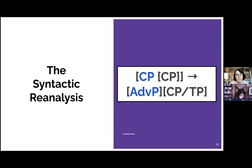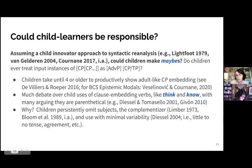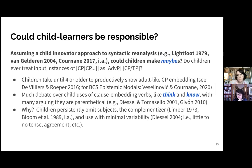This syntactic reanalysis — from a biclausal construction to an adverb phrase adjunct on a monoclausal construction — raises the question of where it comes from, and more specifically, could child learners be responsible for this? Adopting a child innovator approach to syntactic reanalysis, we ask: could children make 'maybes'? More broadly, do children ever treat instances of what we know to be biclausal constructions from the input language as adjuncts on a single phrase or adverbs on a single CP? Generally, we know children take a long time — until age four or older — to show adult-like CP embedding in their production and comprehension.